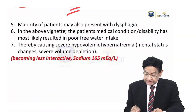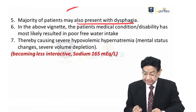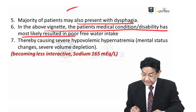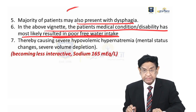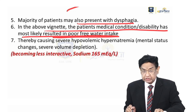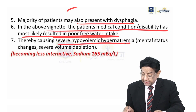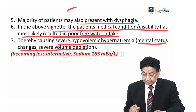Inclusion body myositis patients also have dysphagia. In this vignette, the patient's medical condition and disability has most likely resulted in poor water intake. The patient is also losing fluid from sweating. So that leads to hypovolemic hypernatremia, which can lead to altered mental status changes and severe volume depletion.